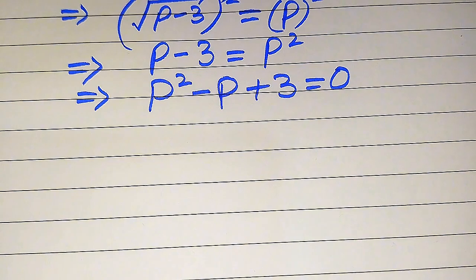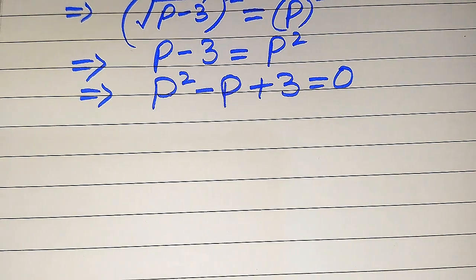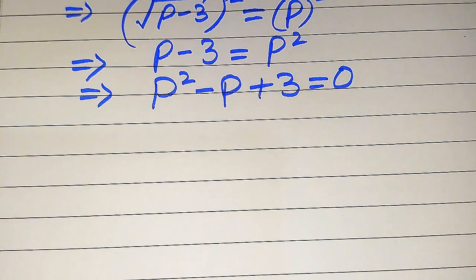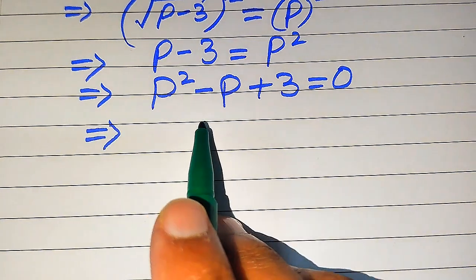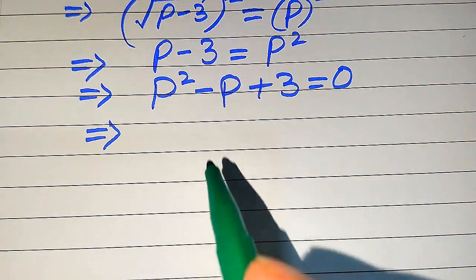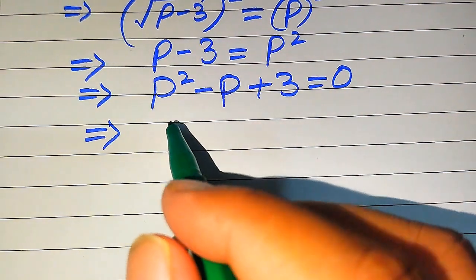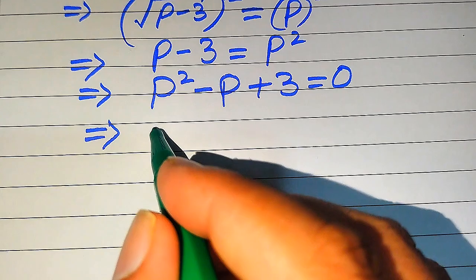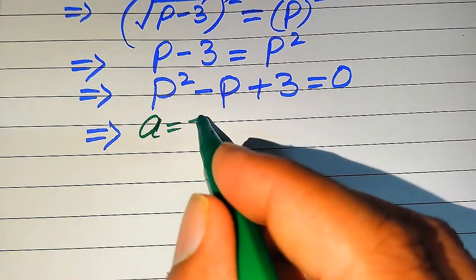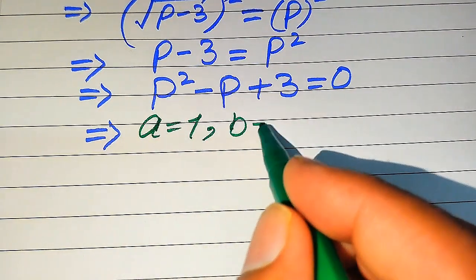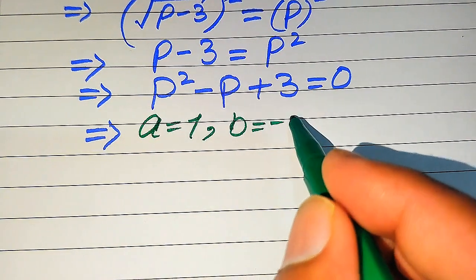This is a quadratic equation. There are three methods to solve it: factorization, completing the square, and the quadratic formula. Here we use the quadratic formula. The coefficients of this equation are a = 1, b = −1, and c = 3.